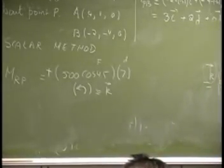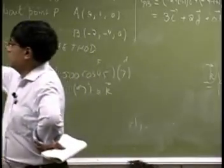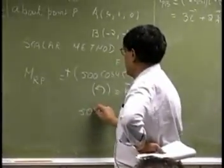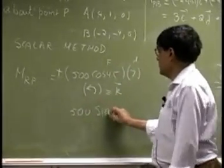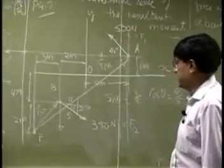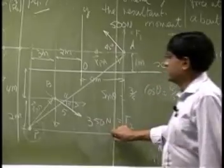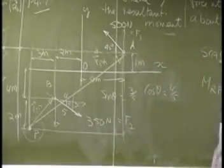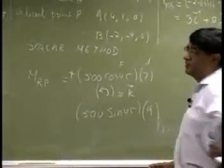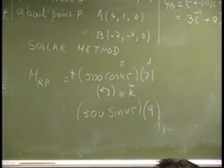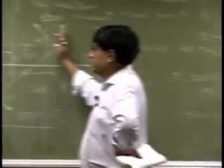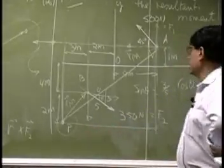Now we do the same thing for the second component. Its magnitude is 500 sine 45. That's the magnitude. Then we need the perpendicular distance — you bring it here and the distance from here all the way up is 4 plus 6 plus 3 equals... for this problem that will be 9 meters. So you multiply this by 9, which gives you the magnitude of the moment of the vertical component about point P.